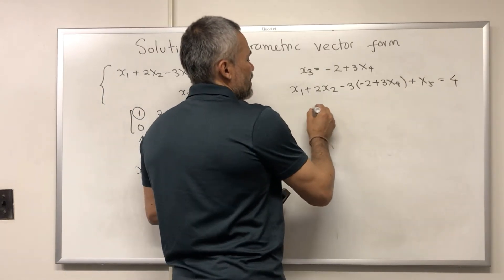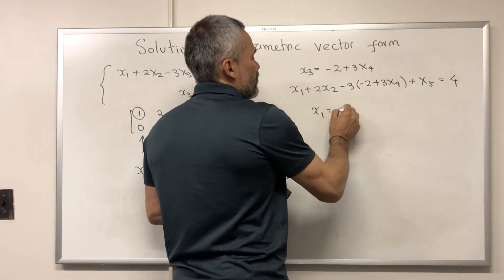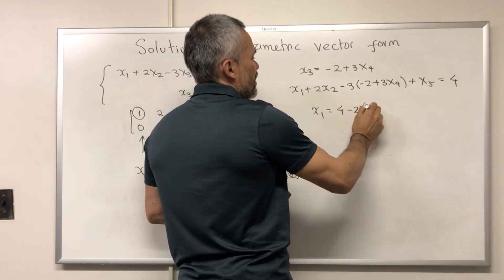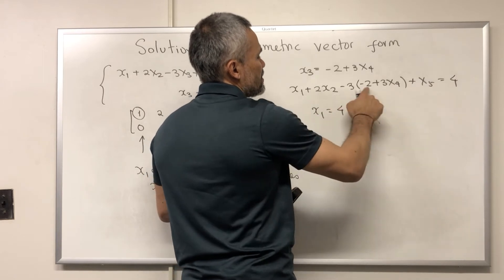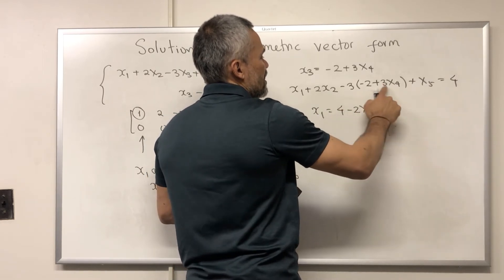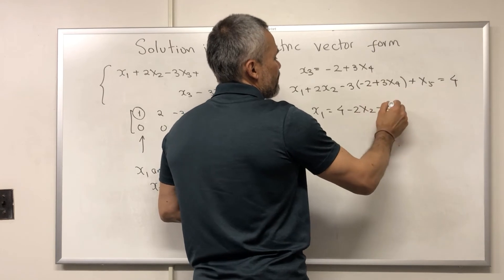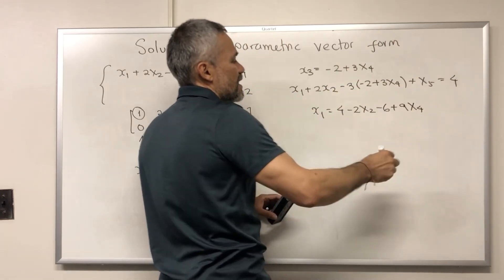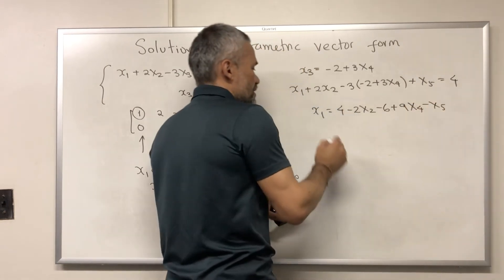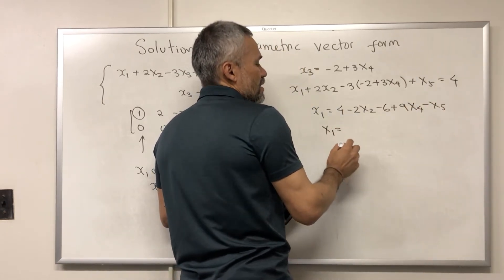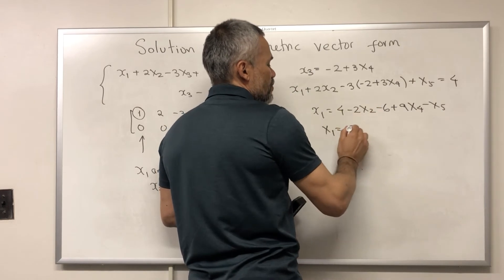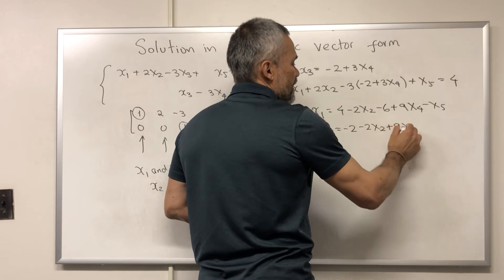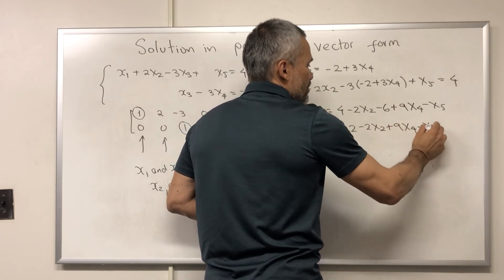Let's solve for x1 here. Then we have that x1 is equal to 4. Here we have minus 2x2. This is plus 6, then it will be minus 6. And this is minus 9x4, it will be plus 9x4 because I'm moving to the other side. Minus x5. And that means that x1 is negative 2 minus 2x2 plus 9x4 minus x5.